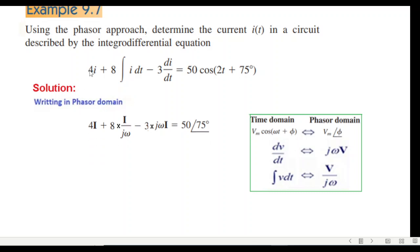now the left side of the equation: 4i phasor capital I, plus 8 into integration. 8 into integration, we formalize v over jω or i over jω. So in our case it is i, so i over jω. Then minus 3 di/dt. From here, dv/dt is jωv, therefore di/dt would be jωi. So jωi. And this I have already told that the magnitude and the phasor angle. This is in phasor form.